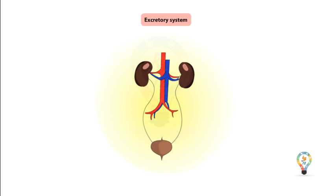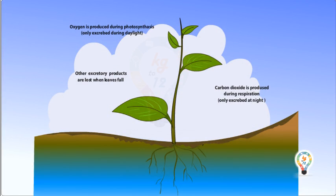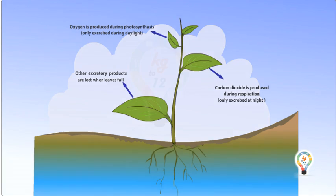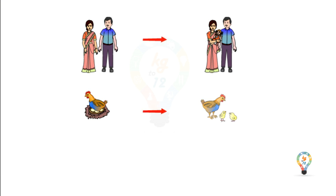Living things excrete. All living things eliminate waste from their body. This process is known as excretion, and the organ used for excretion by living things is known as the excretory system. Plants also eliminate harmful substances.